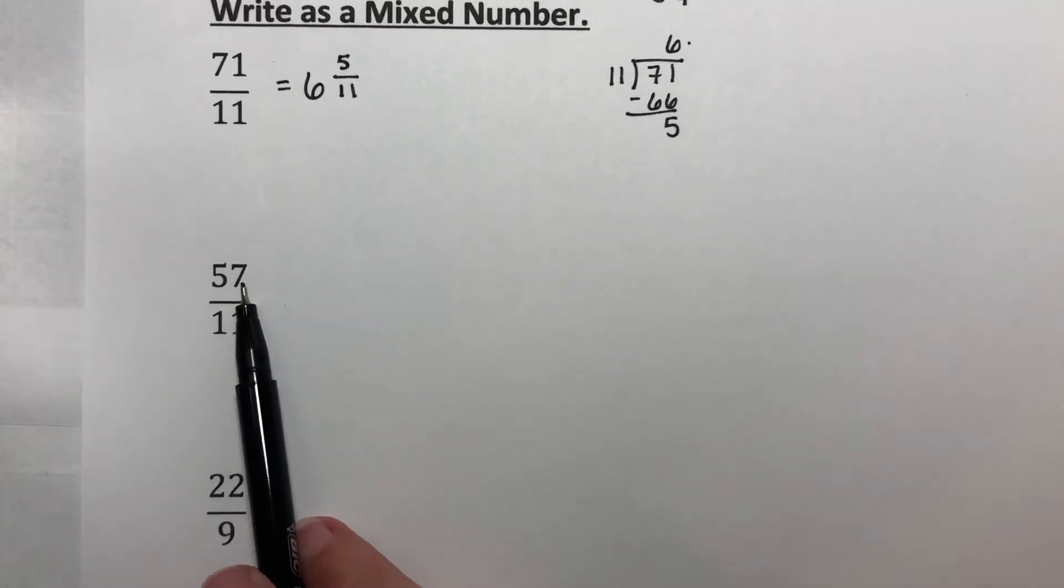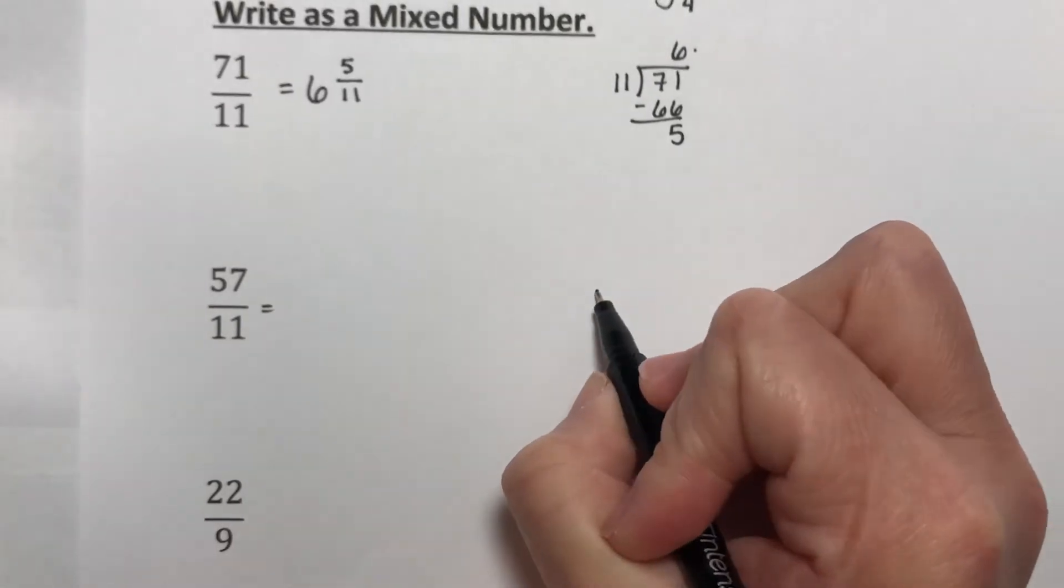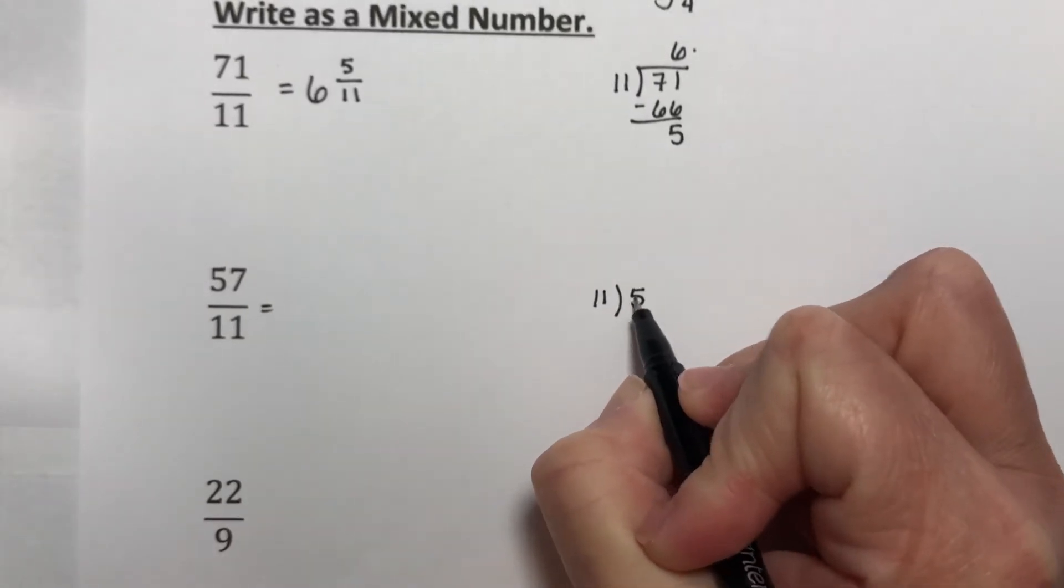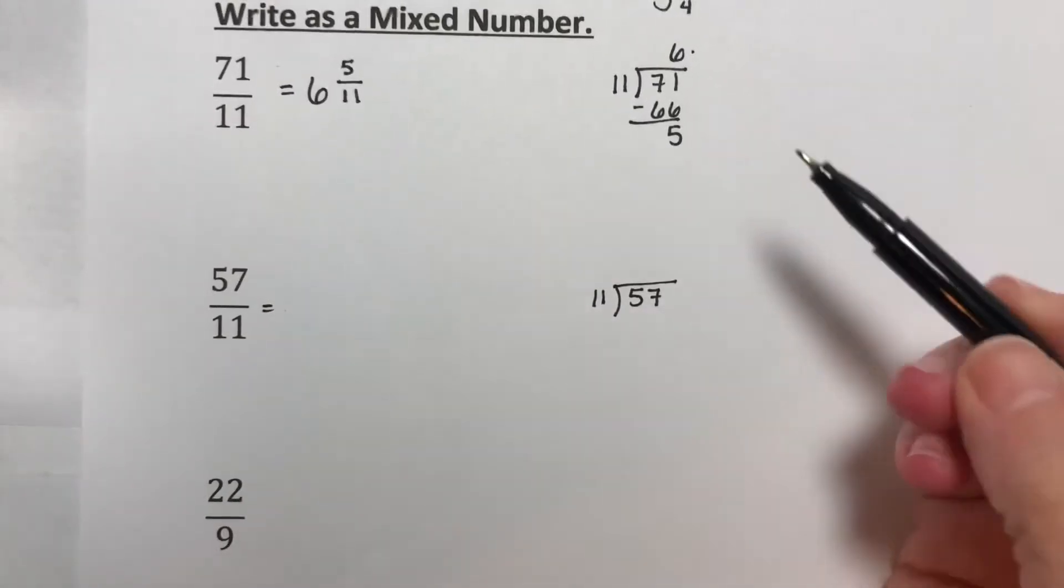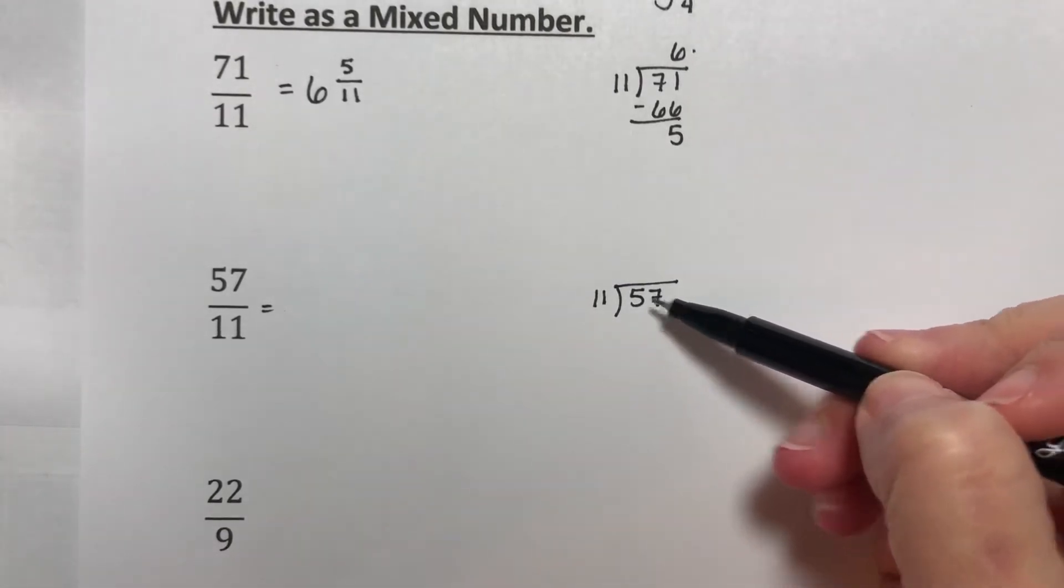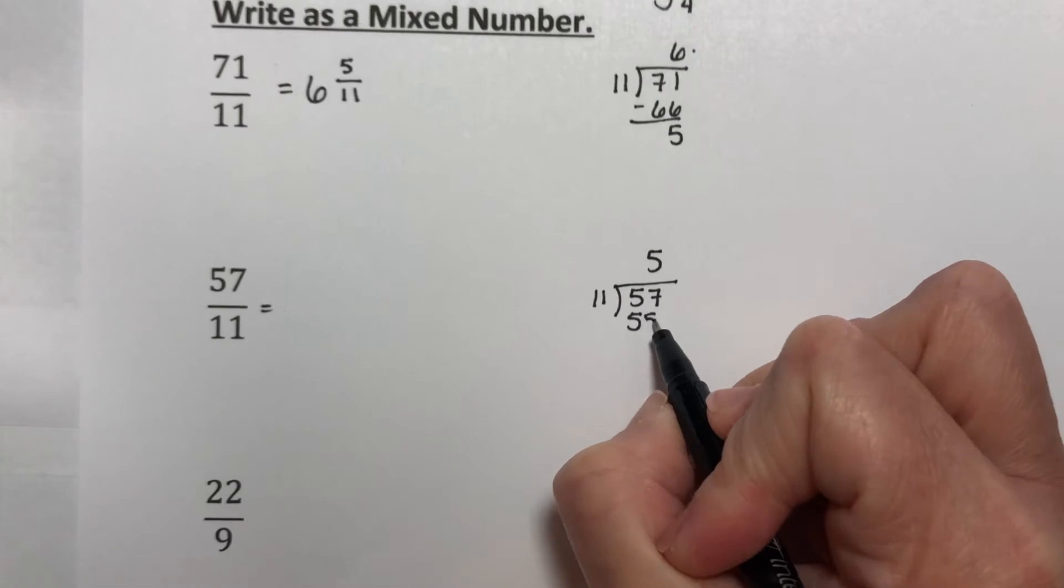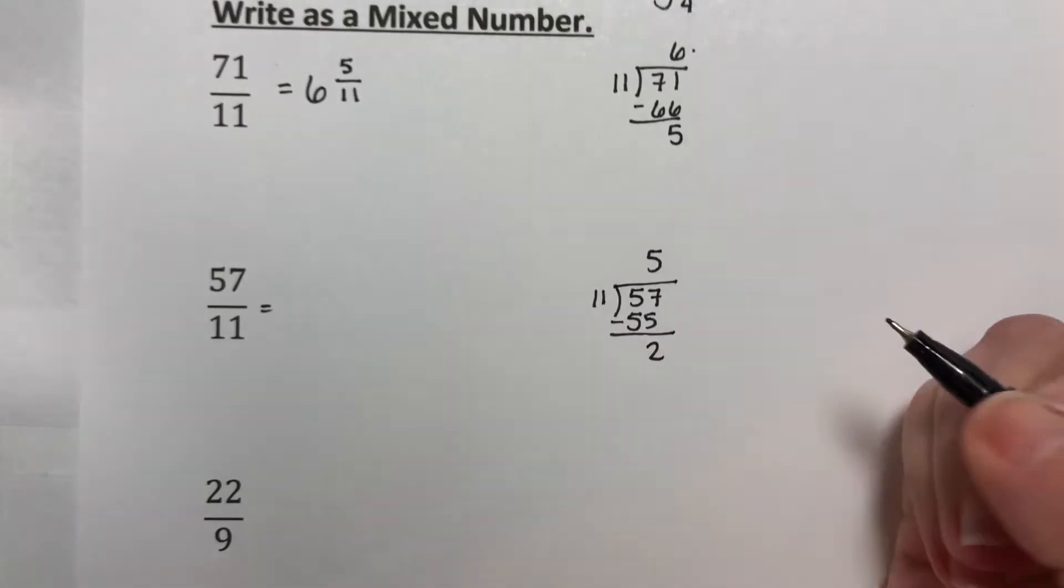Let's do the same thing here. 57 elevenths. What is this? This is 11 divided into 57. So how many times does 11 go into 57? 11 times 5 is 55, so it will go in five times because that's smaller. 5 times 11 is 55. Subtract away, you get a 2.